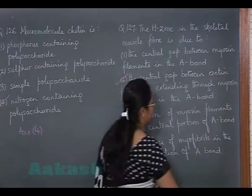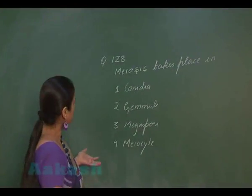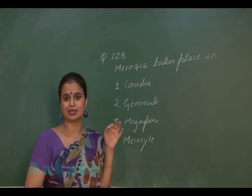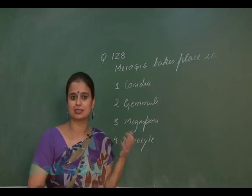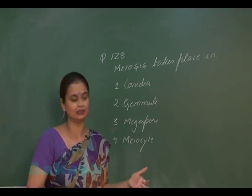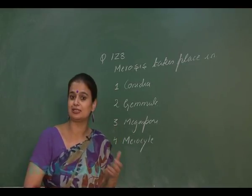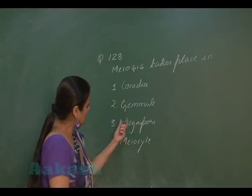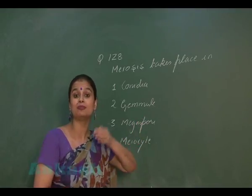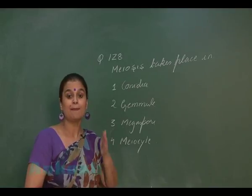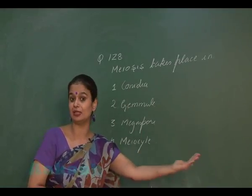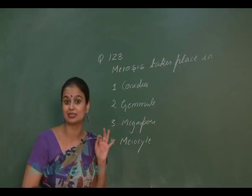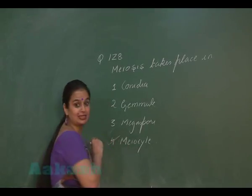Question 128: meiosis takes place in which structure? Conidia is an asexual structure which after mitosis results in a new fungal body. Gemmule is formed in sponges — also an asexual structure formed after mitosis. Megaspore is haploid and is formed after meiosis; mitosis then occurs in the megaspore to form the female gametophyte or embryo sac. A meiocyte is any cell that undergoes meiosis, so meiocyte is the correct option.